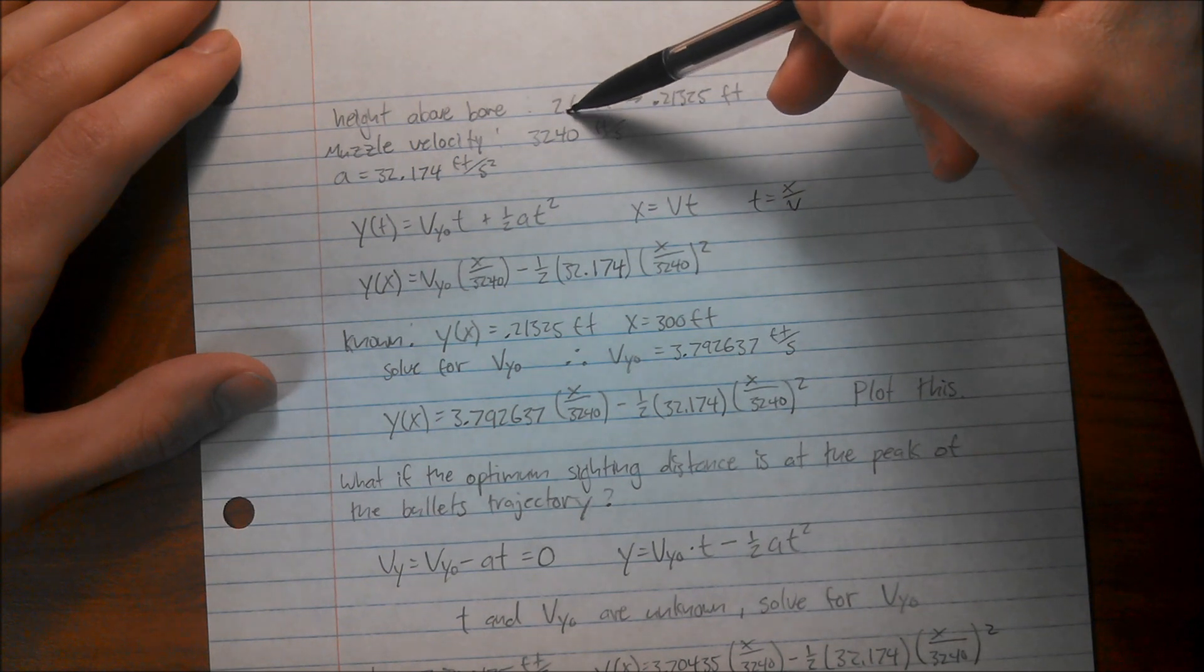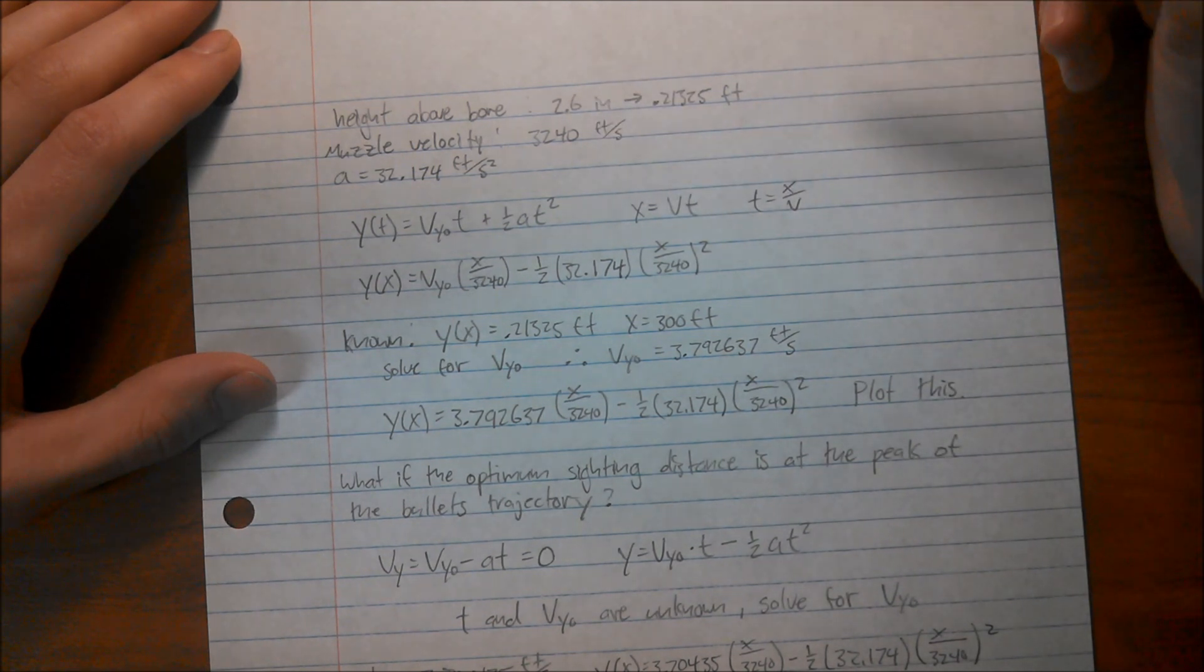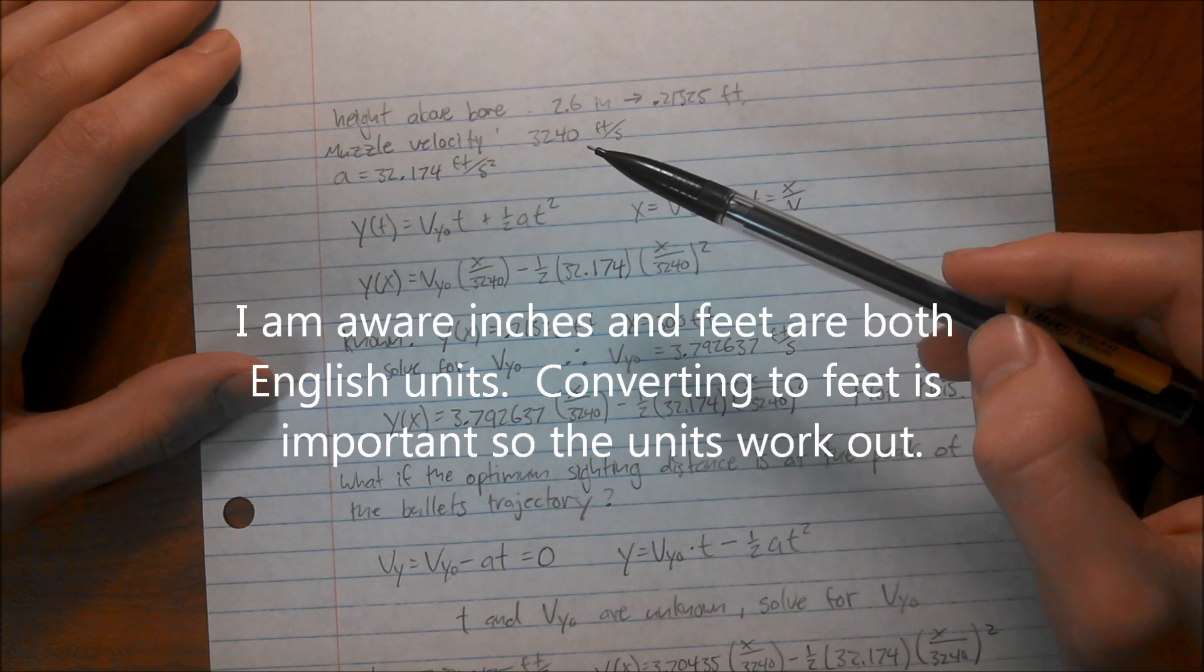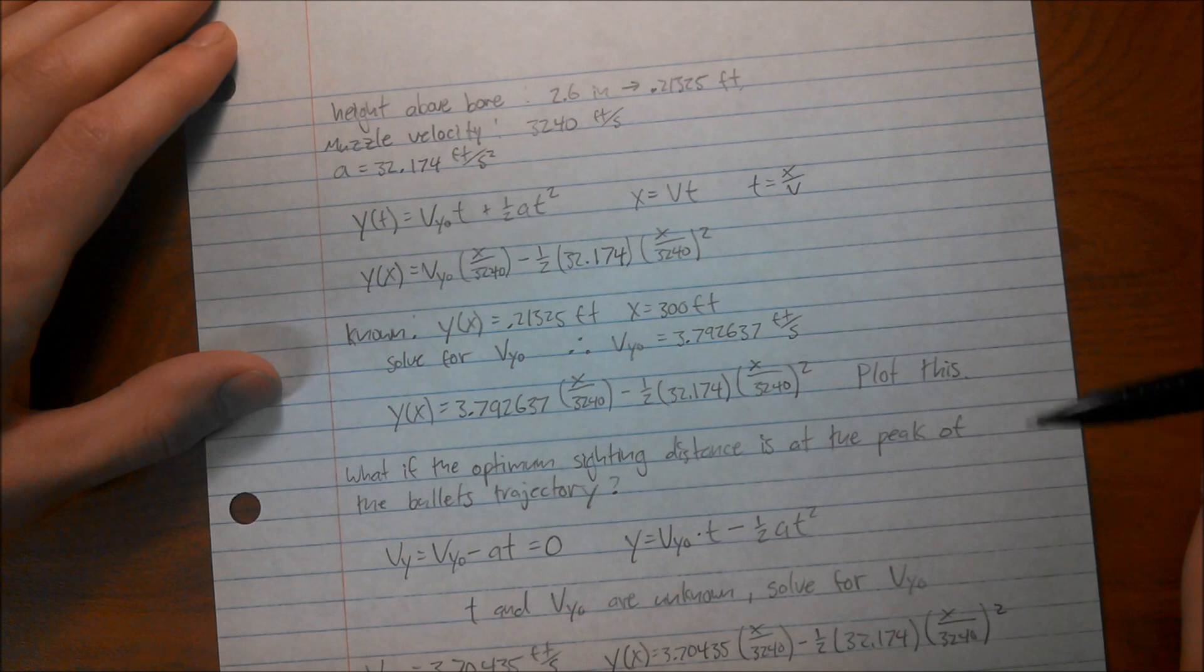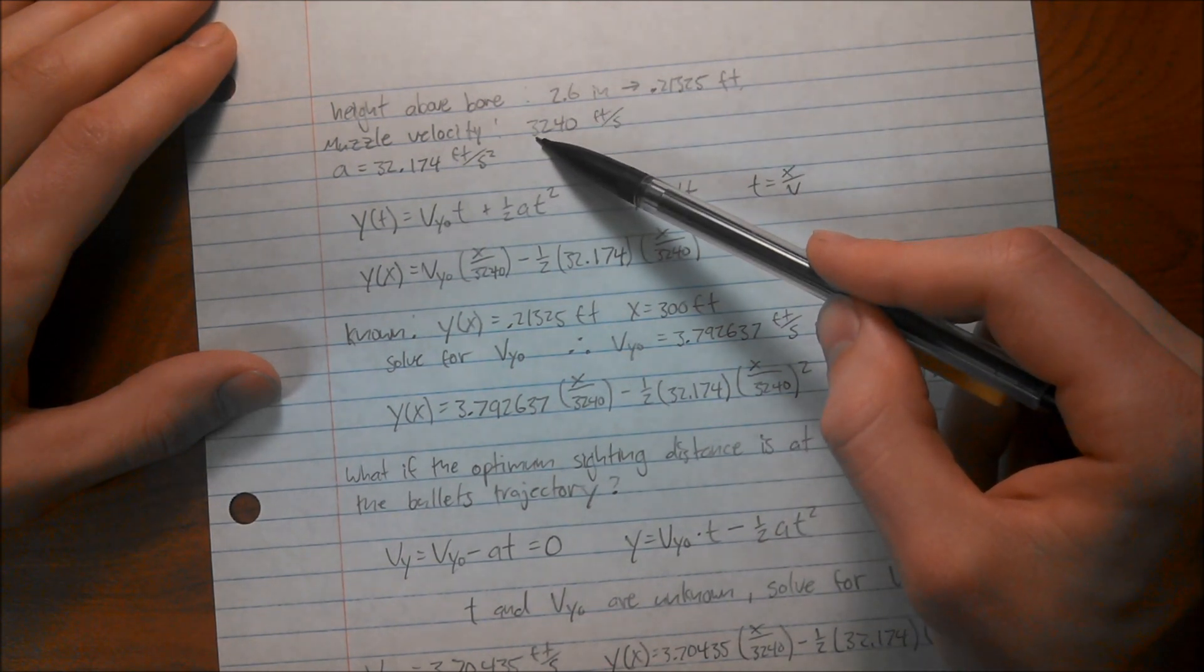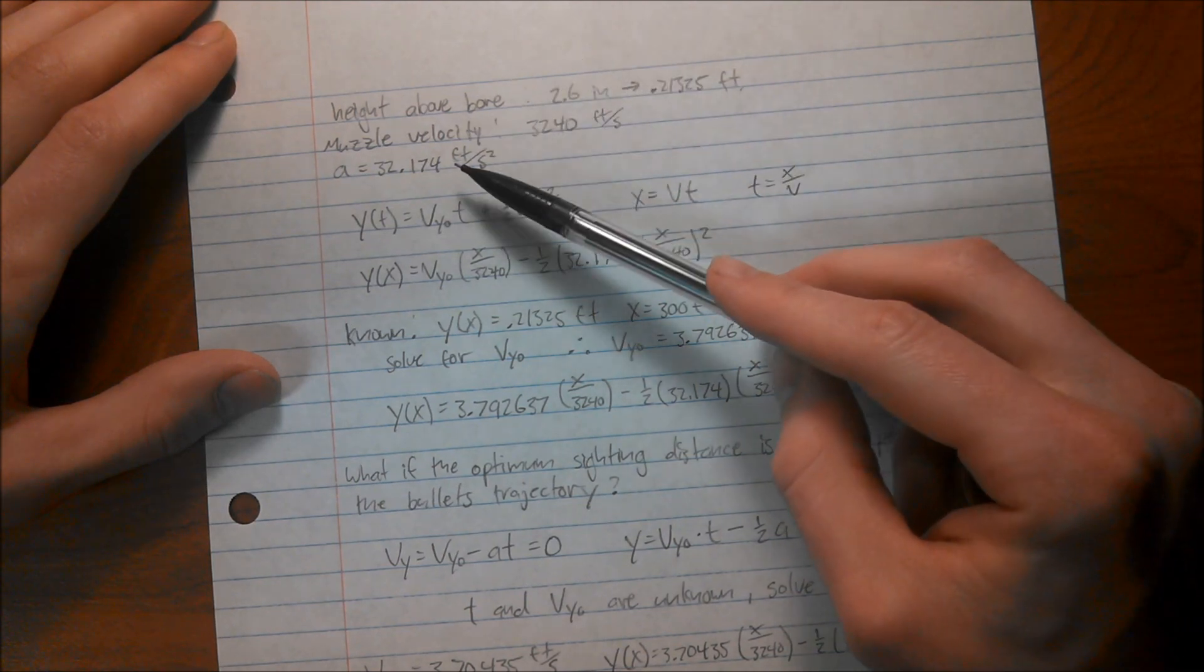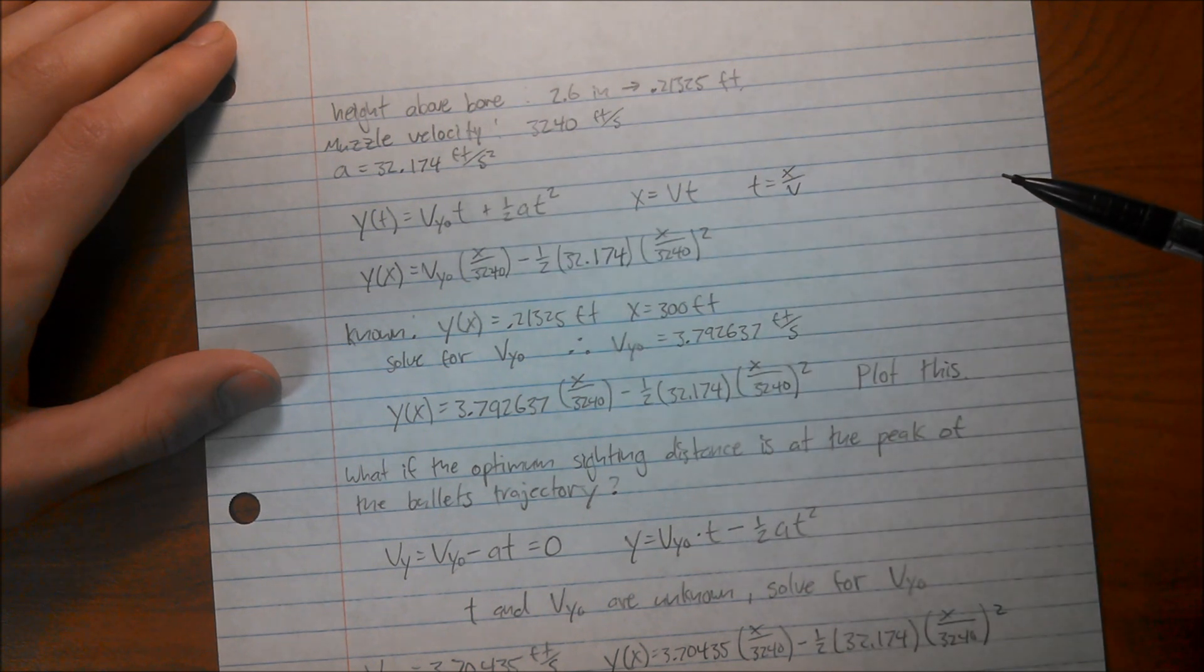So on an AR-15, the height of your sight above your bore line is 2.6 inches. And since we're working in English, we're going to go ahead and convert that to feet. The muzzle velocity of, I think I chose, Federal American Eagle 223 55 grain is something like 3,240 feet per second. And then the acceleration due to gravity is just standard value, 32.174 feet per second squared.